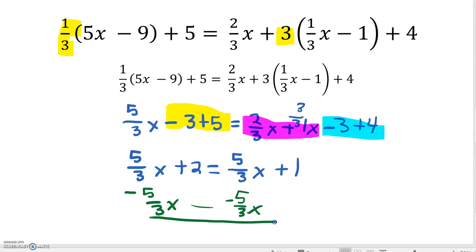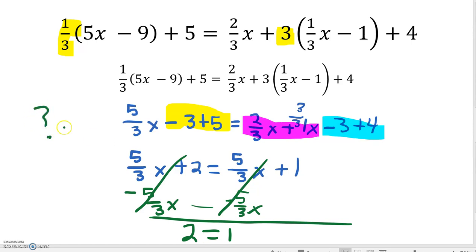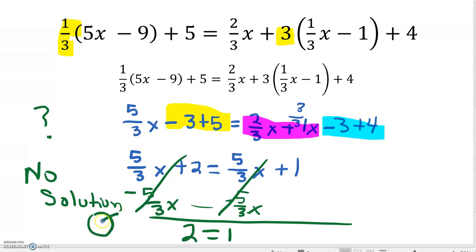When I do this, our variables are eliminated, and I'm left with 2 equals 1. Is that possible? Can 2 equal 1? No. So this means we have no solution – or no real solution. There's no number we can plug in, add 2, plug in the same number and add 1, and have the two quantities be equal.